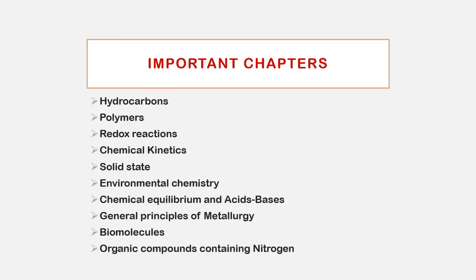Redox Reactions and Stoichiometry involve problem-solving. For Chemical Kinetics: units, formulas, and problems are important. First order, second order, zero order, and pseudo order reactions — along with units, formulas, half-life period, and the difference between order and molecularity — are easy to calculate.